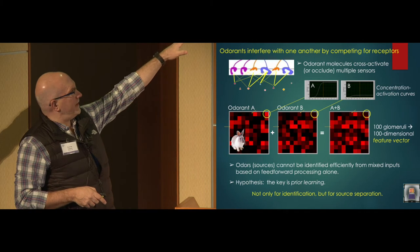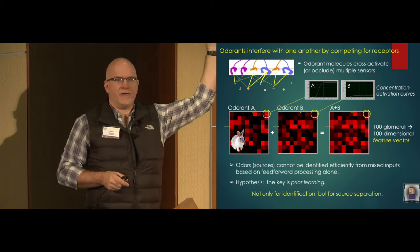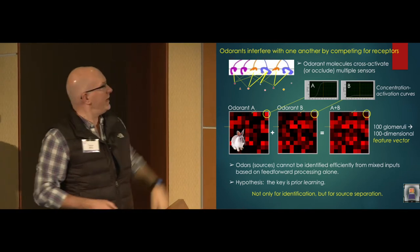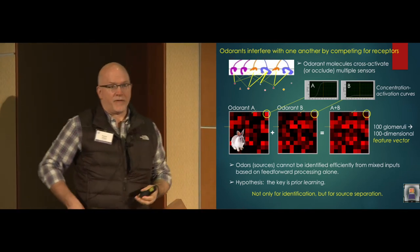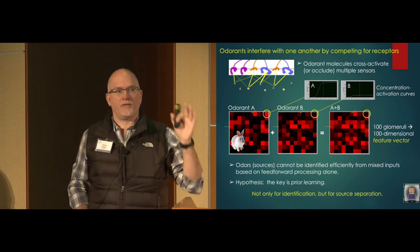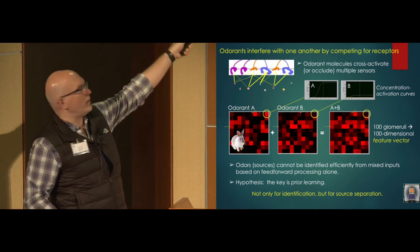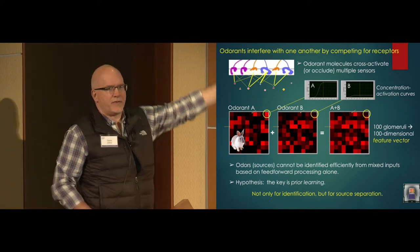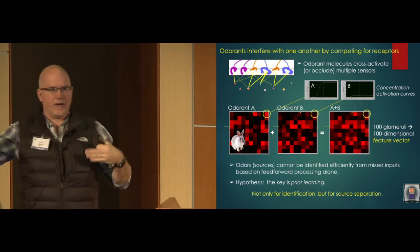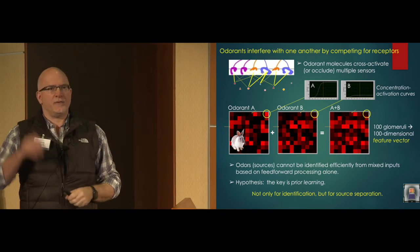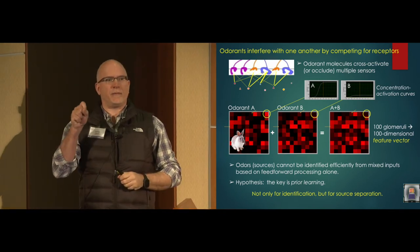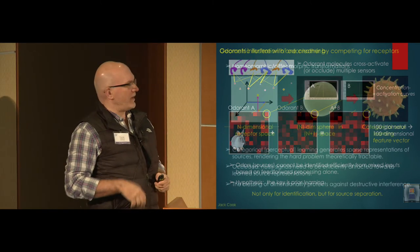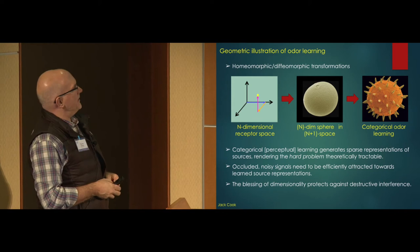For now, let me just say that odor sources can't be identified using just a forward calculation. They're too messed up by background. Our longstanding hypothesis has been that you can solve this through prior learning. You can solve this if you already know about odor A. And this is not just, oh, I can smell this now, and I have a label for it, which is rabbit. This is that you can't even do the source separation without knowing A in advance, without having a representation in your brain of A in advance from prior learning.